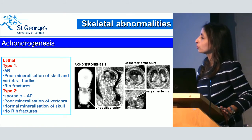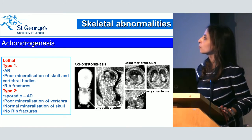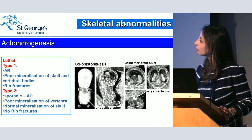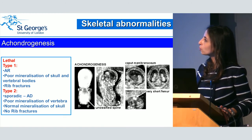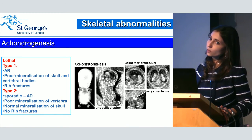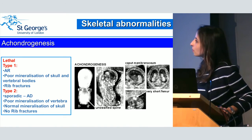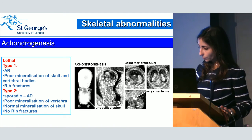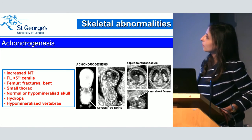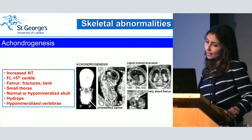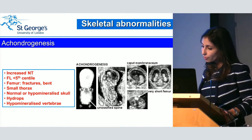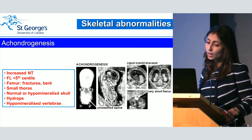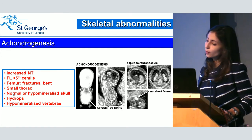Achondrogenesis is a lethal skeletal dysplasia. There are two types — type 1 tends to be autosomal recessive with 25% recurrence risk, while type 2 is usually sporadic and autosomal dominant. One difference between them: in type 1, poor mineralisation affects both the skull and vertebrae — you almost don't see the spine, it is very poorly ossified. While type 2 affects mainly the vertebrae with normal mineralisation of the skull. In our paper, we found in early pregnancy: increased nuchal translucency, short femur, evidence of fractures and bent femur, small thorax, hypomineralisation (sometimes normal mineralisation of the skull), some presented with hydrops, and the vertebrae of the spine were hypomineralised in all cases.